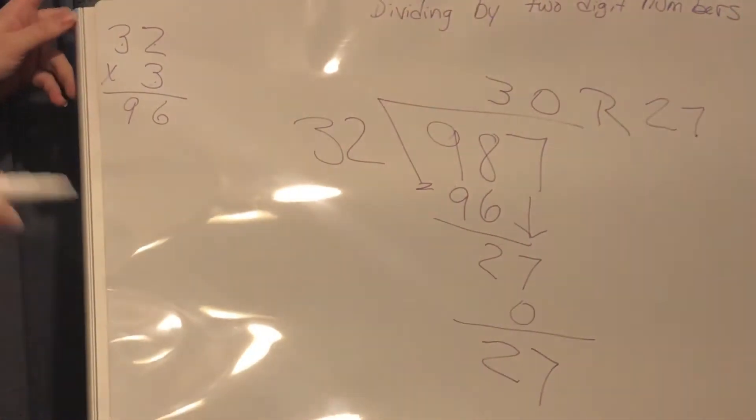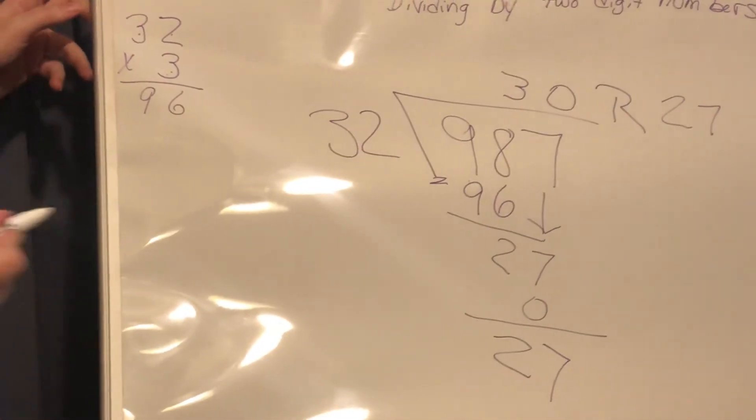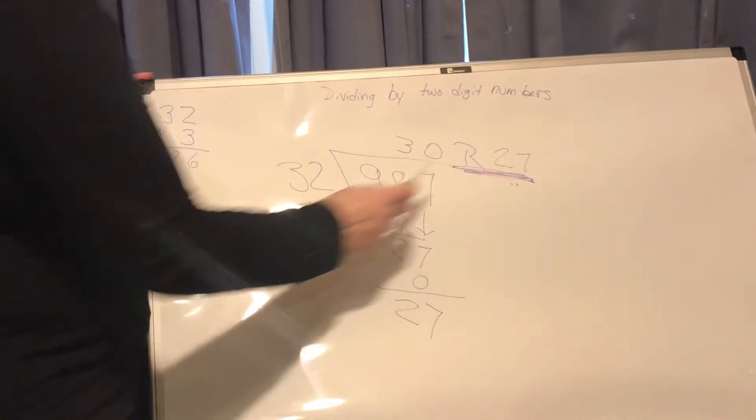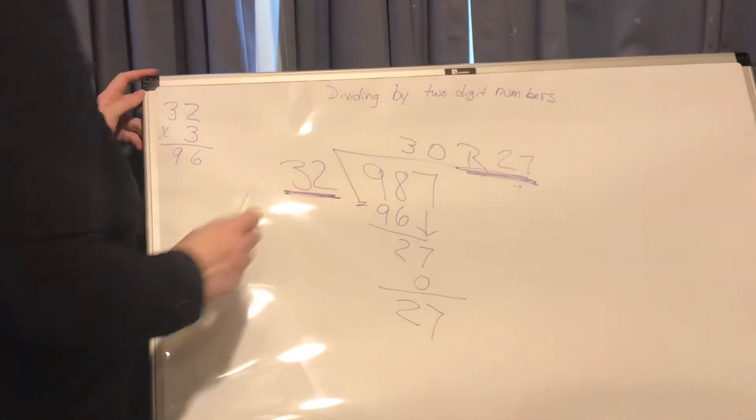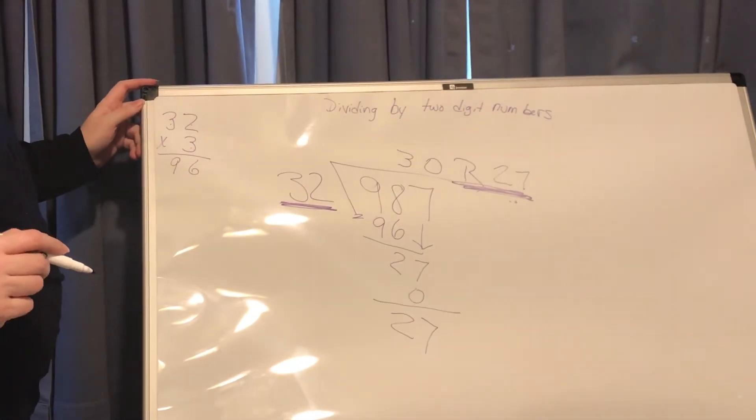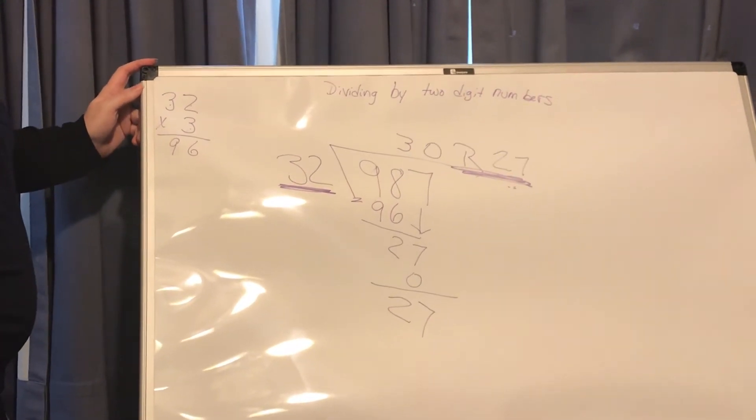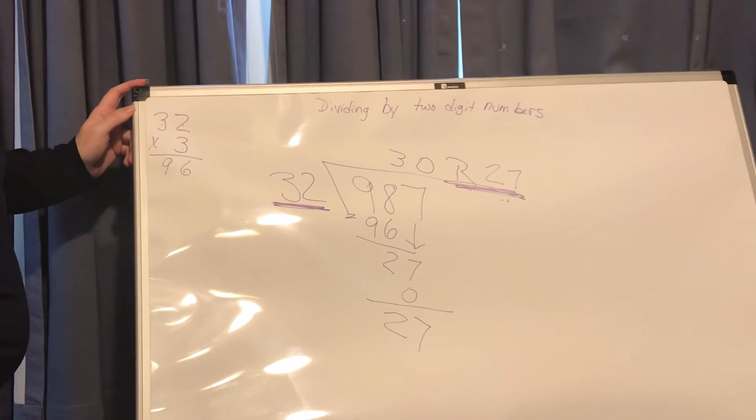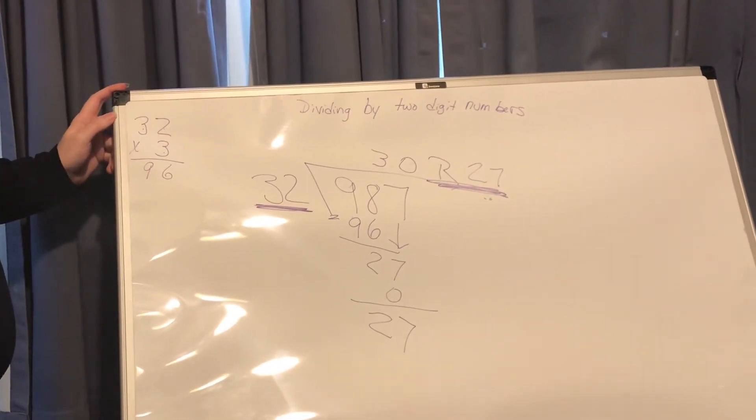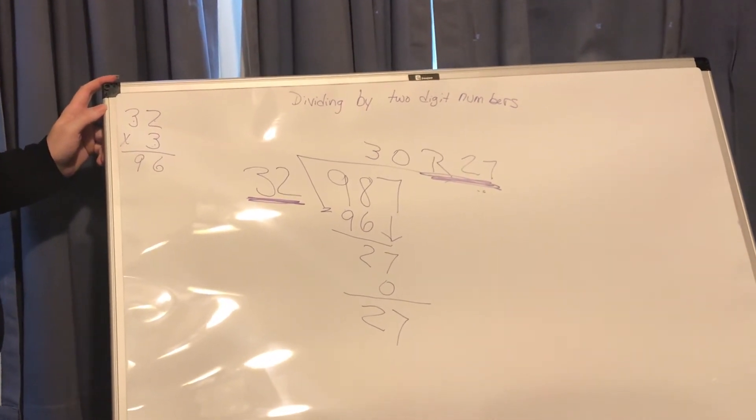So one thing I want to point out is anytime you have a remainder, make sure your remainder is less than your divisor. If your remainder is bigger than your divisor, then you have missed a step and you need to restart it over and redo it.